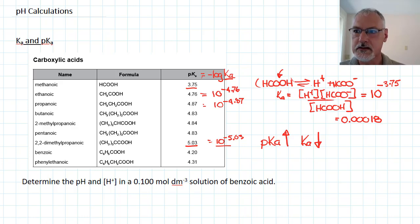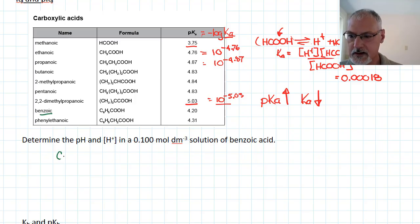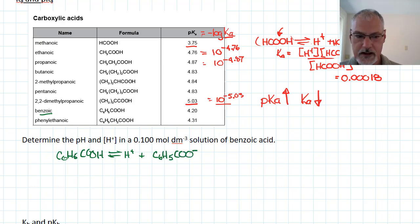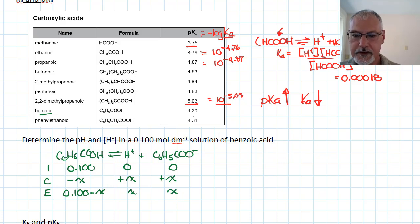Let's use this now in a pH calculation. I'd like to determine the pH of a 0.1 molar solution of benzoic acid. Let's write out the reaction: C6H5COOH dissociates into H+ and its conjugate base C6H5COO-. I'll set up our ICE table for this. We start with 0.100, none of this, none of this. This goes down by X, these both go up by X, giving us 0.100 minus X, X, and X. Benzoic acid's equilibrium constant would be 10 to the negative 4.2.